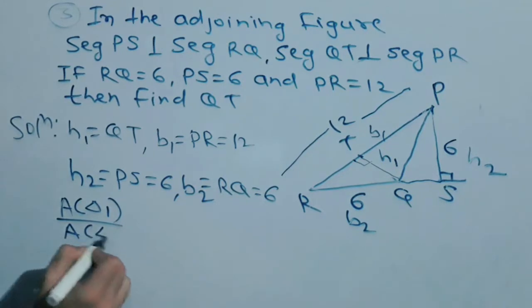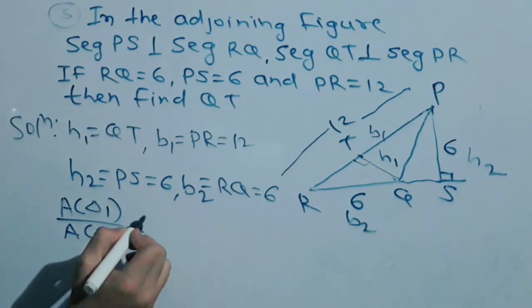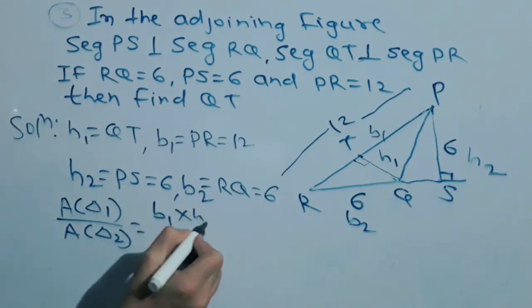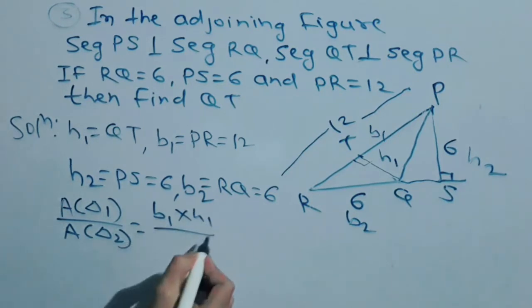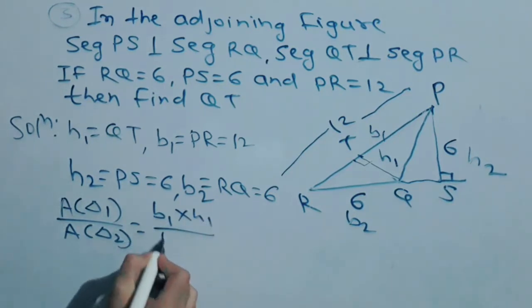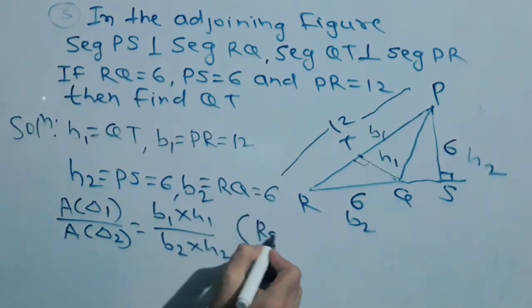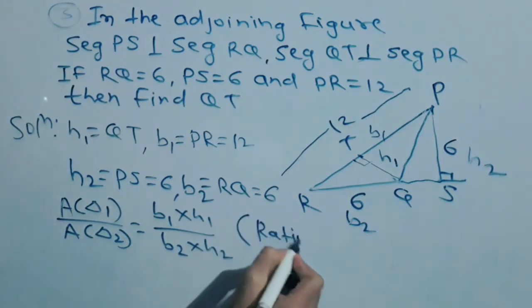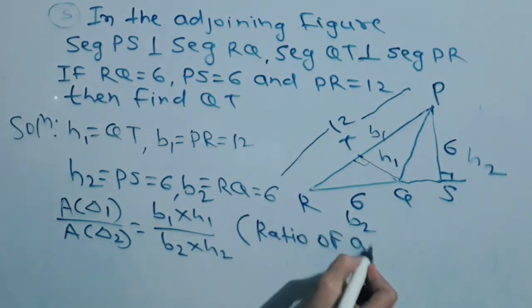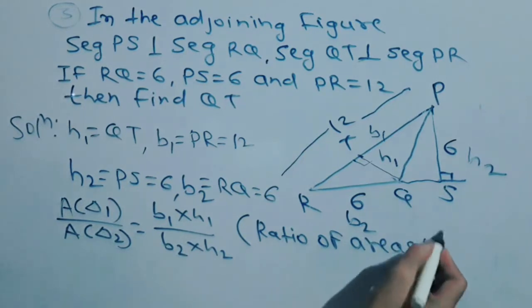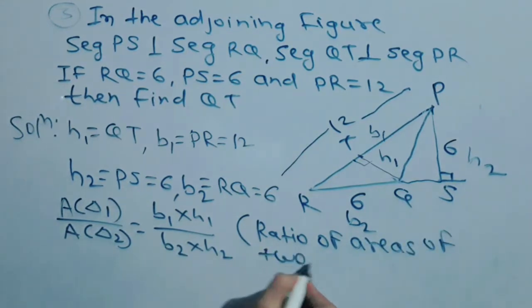Multiply H1 upon B2, multiply H2. So this is the ratio of areas of two triangles — two triangles.